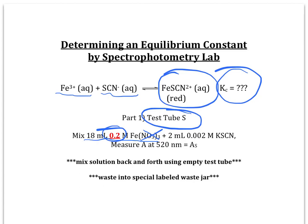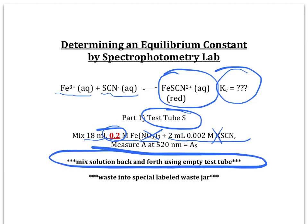You're going to mix that with 2 milliliters of 0.002 molar KSCN solution. The K+ is a spectator ion in this case, so just the SCN- ions react. As always, when you mix solutions, mix back and forth using an empty test tube to make sure it's thoroughly mixed, and then get the absorbance at 520 nanometers. You can write down that absorbance and call it As. We're going to use that value As in the calculations later on. Also very important, when you're done with any of the test tubes in this experiment, be sure it doesn't go down the sink, but instead goes in the special labeled waste jar that we'll provide for you on the instructor's bench.